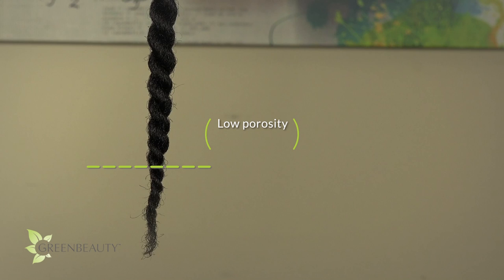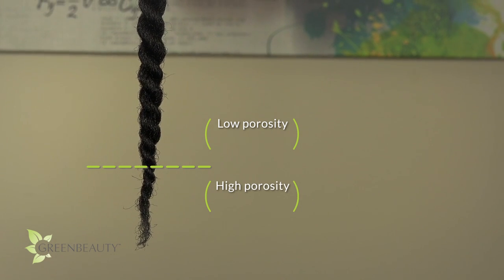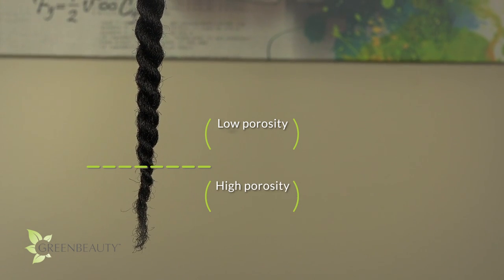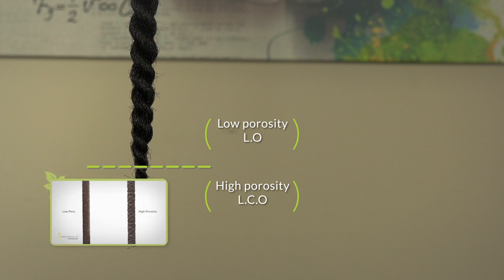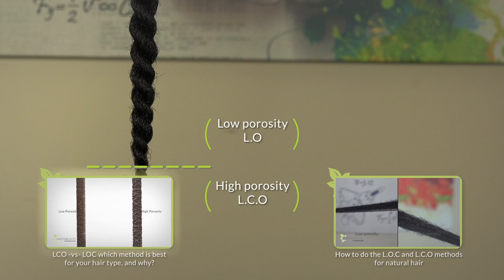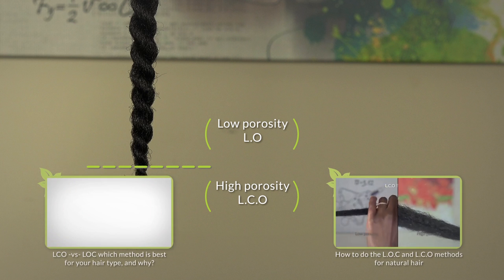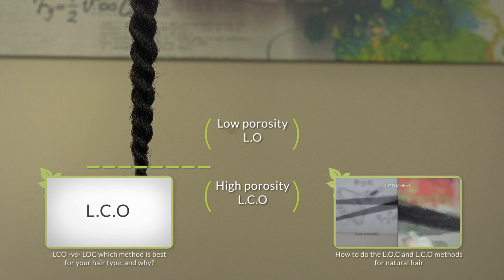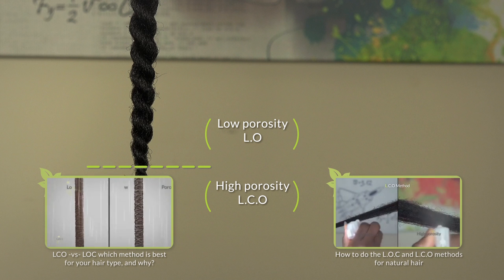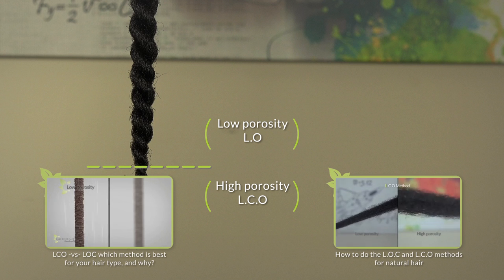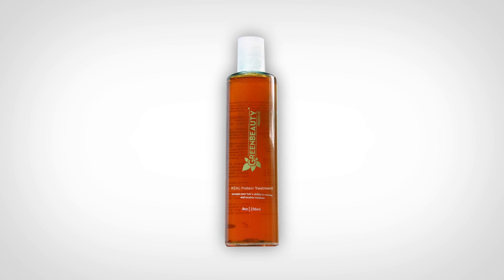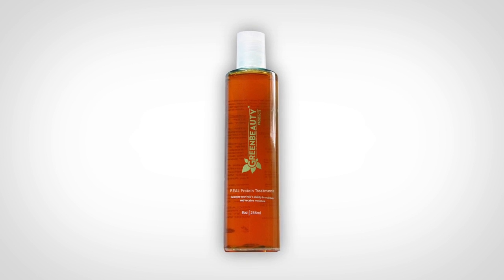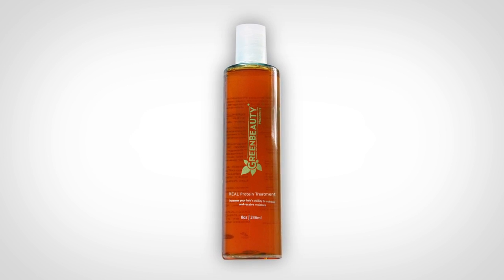When you moisturize your hair, make more effort to seal the moisture into your ends. I typically do liquid oil on my low porosity hair and liquid cream oil on my ends. Below are two video links — one where I compare the LOC and LCO methods, and one where I show you how to do the LOC and LCO methods based on your hair's porosity. Also, when I do real protein treatments, I usually focus the mixture on my ends to help patch up all the damage and splits.